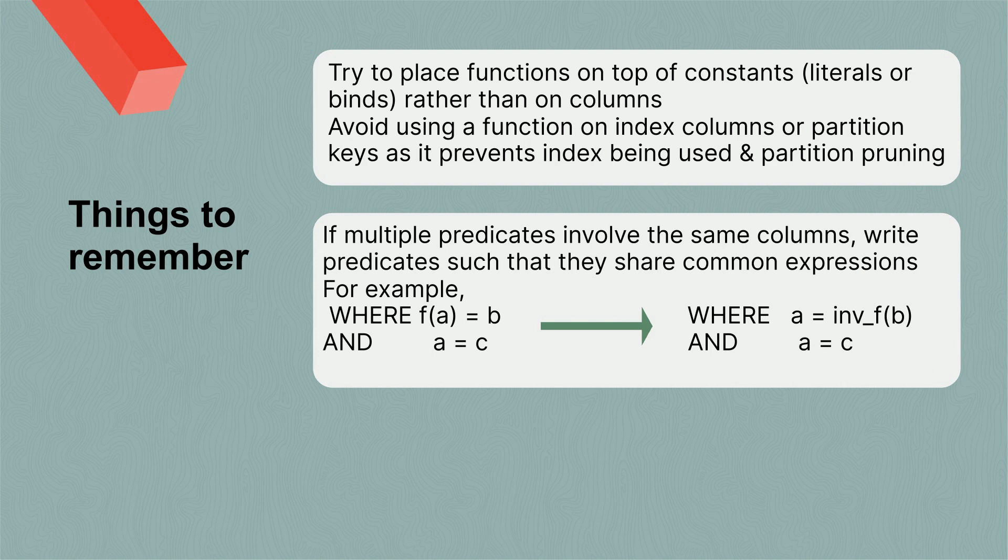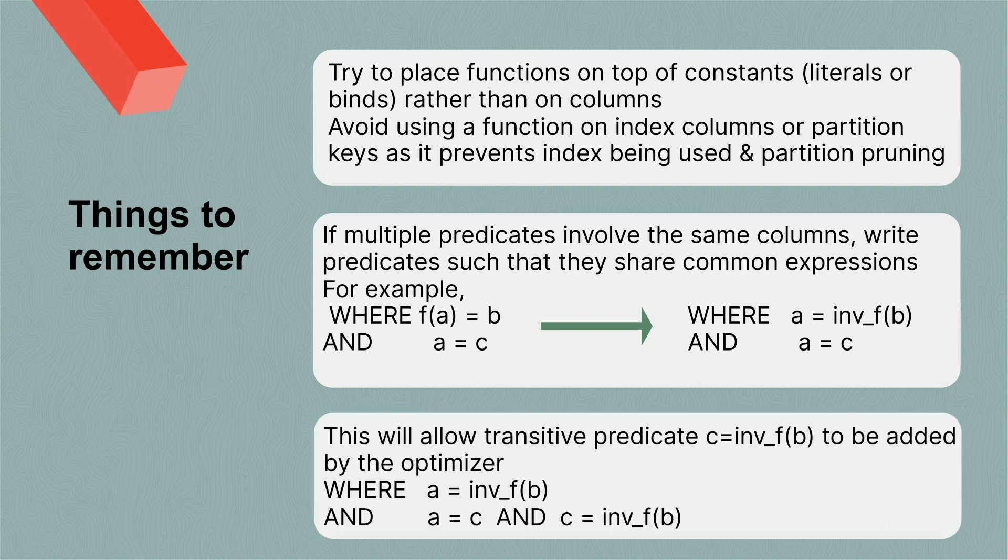So, for example, if we've got a where clause predicate that's got a function wrapped around the column A equals B and then A equals C, you really should rewrite that query so that it's A equals the inverse function of B and A equals C. And that allows us to potentially open up different access methods and different join orders when we can add those transitive predicates automatically.